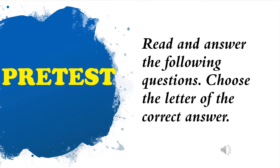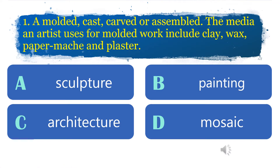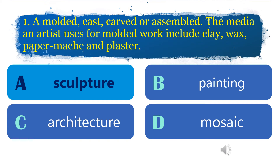Directions: read and answer the following questions. Choose the letter of the correct answer. Number 1: A molded, cast, carved or assembled artwork. The media an artist uses for molded work include clay, wax, paper mache, and plaster. A. Sculpture. B. Painting. C. Architecture. D. Mosaic. The correct answer is letter A.